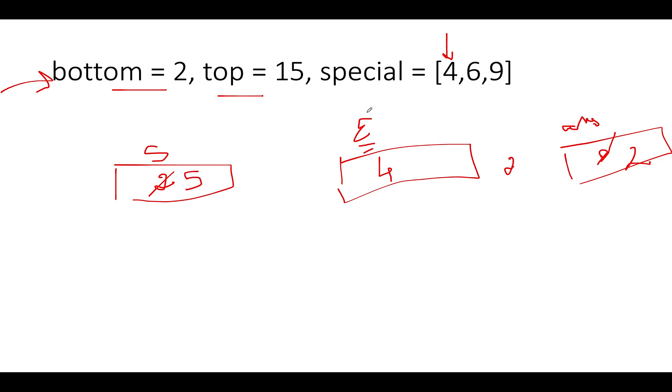And where will end point to? End will now point to 6. So this gets updated to 6. Let's calculate the next contender: 6 minus 5 is 1. So the next contender for the answer becomes 1. Out of 1 and 2, which one is greater? 2 is greater, so the answer remains as it is. Along with this, we should be updating the start pointer. So the start pointer gets updated to 7, which is 6 plus 1.